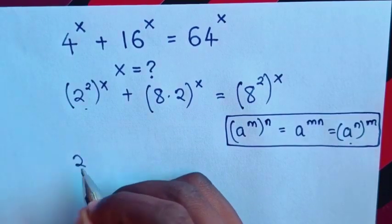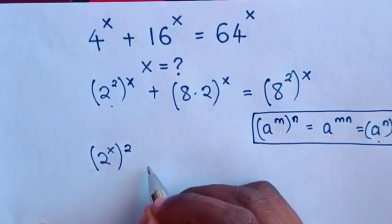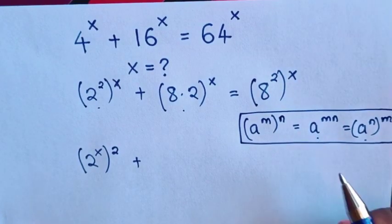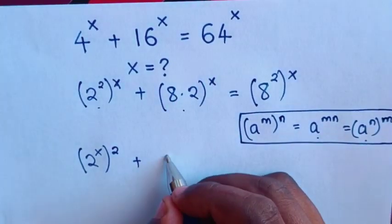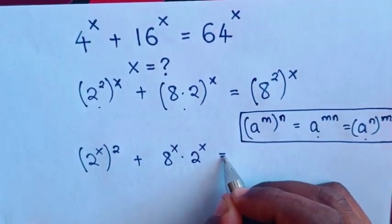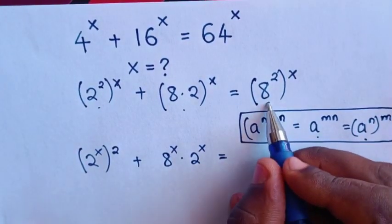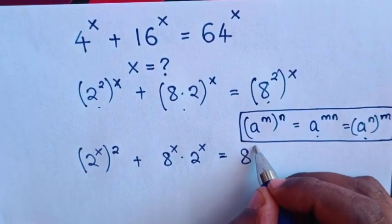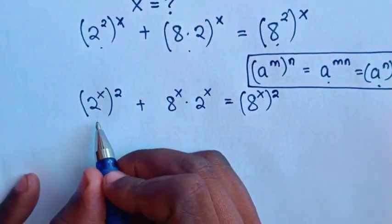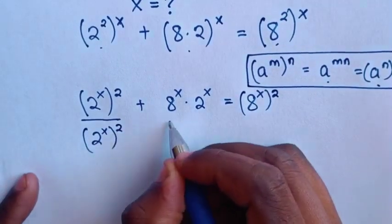Applying the rule to the first term, it becomes (2^x)^2. For the middle term, we multiply the powers, giving 8^x times 2^x. For the right side, applying the rule gives (8^x)^2. Then we divide both sides by (2^x)^2.